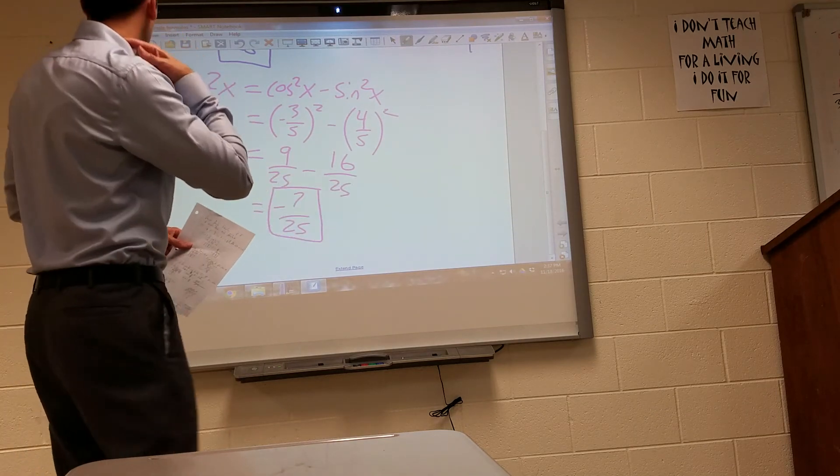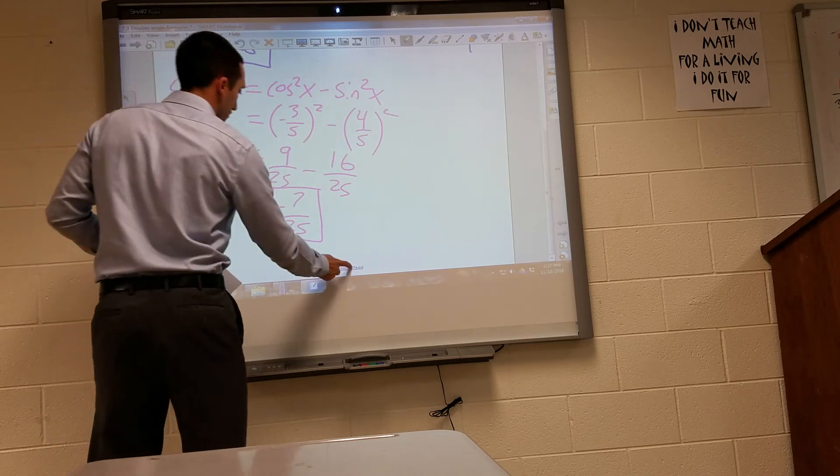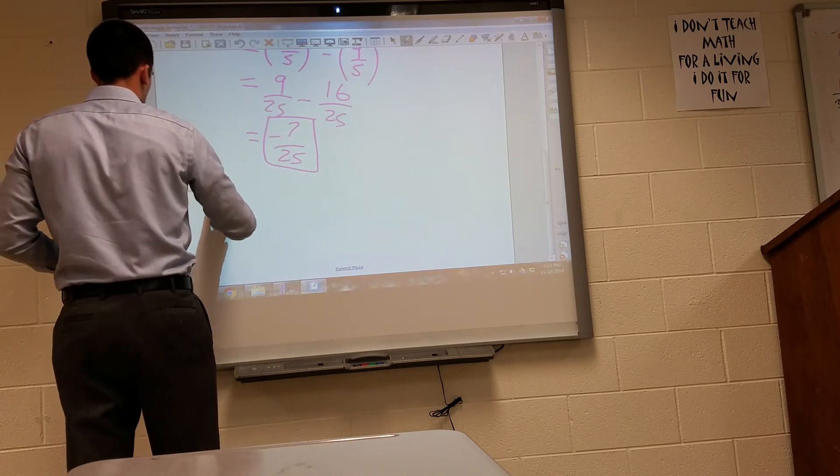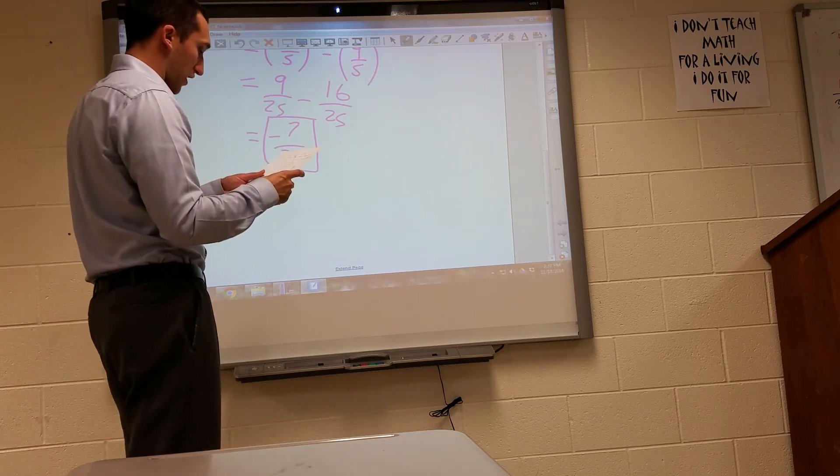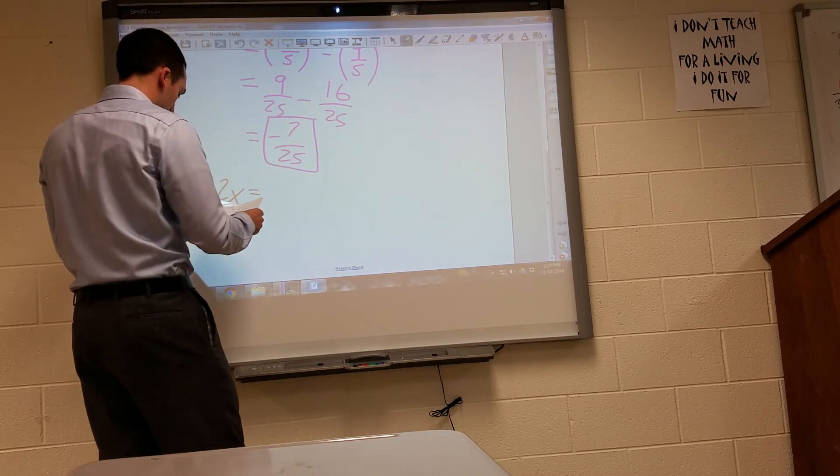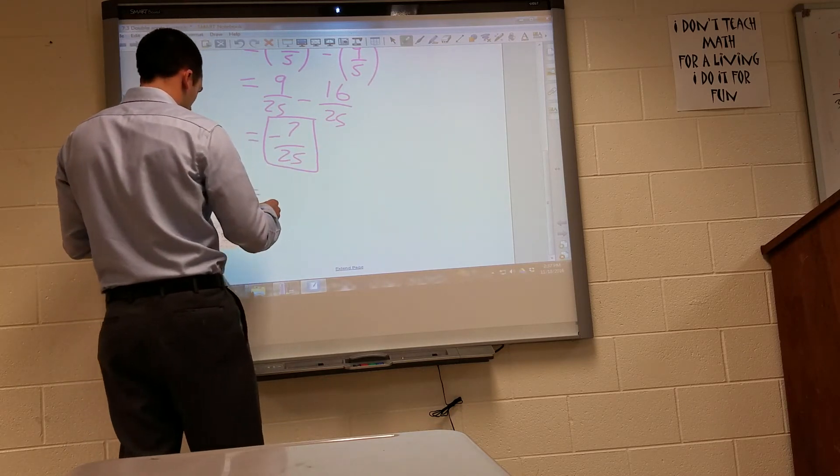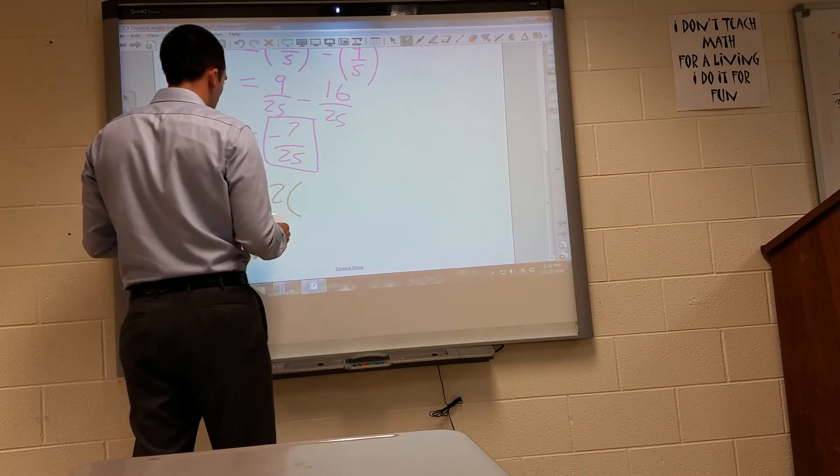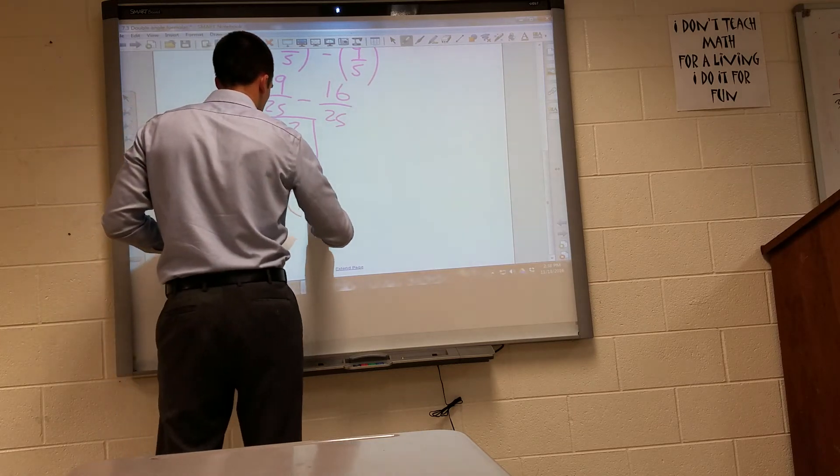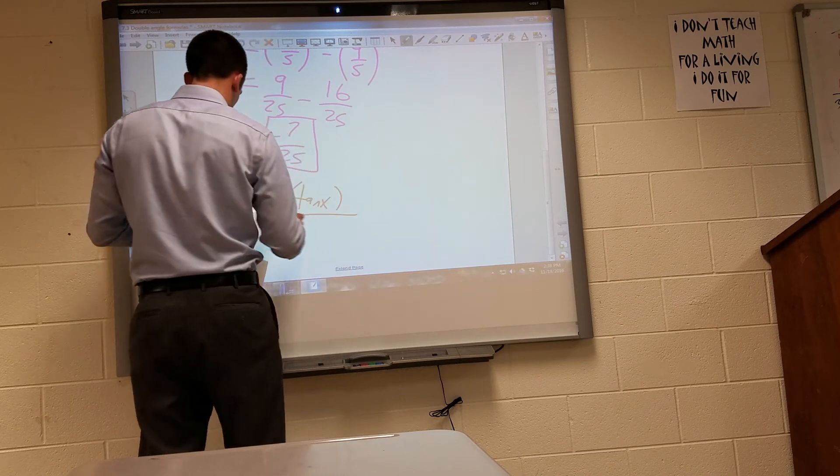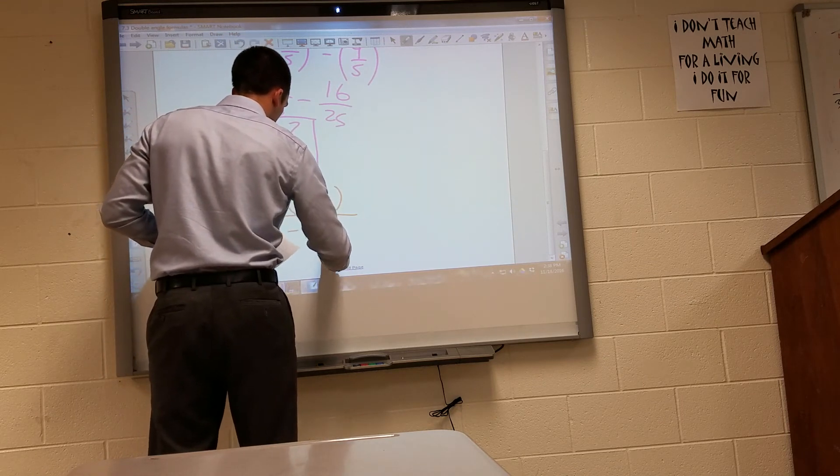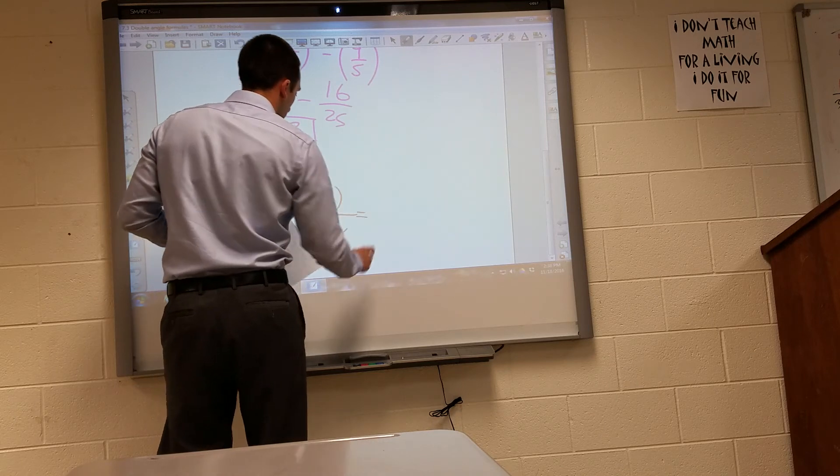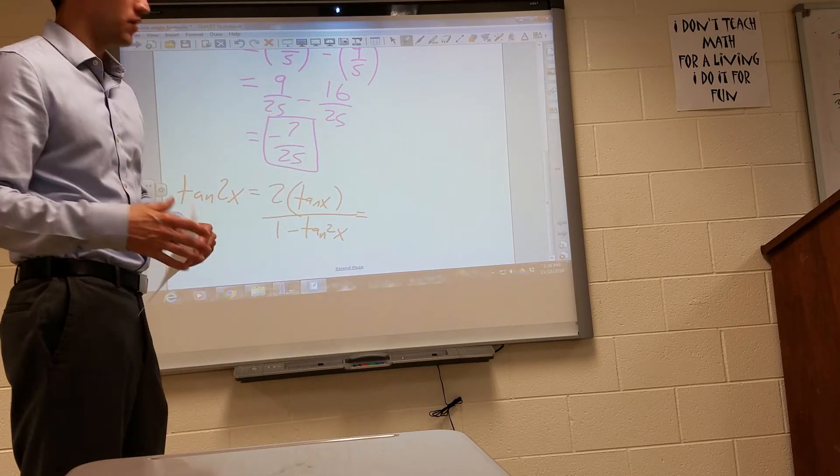Finally, we've got to find the tangent of 2x. And they told us, remember, that the tangent of x is equal to negative four-thirds. So go ahead. Tangent of 2x is two times tangent of x.